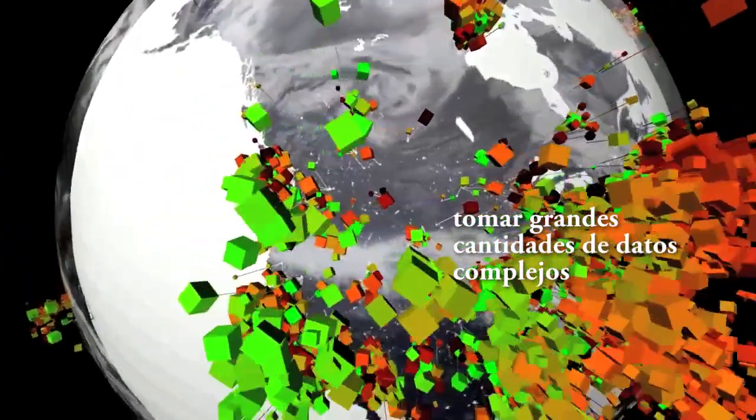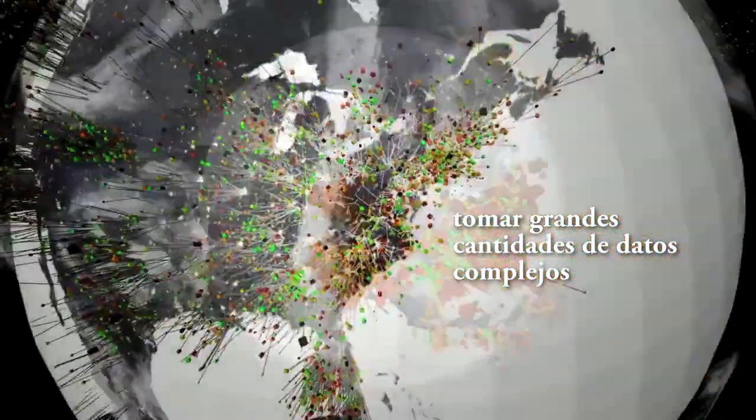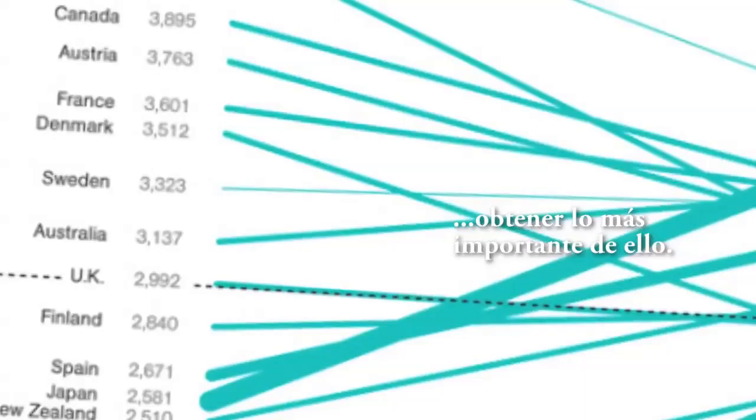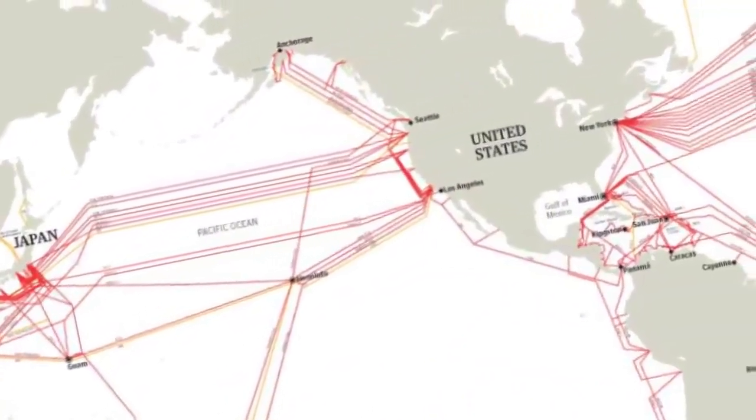Greetings, Corporación Unificada Nacional. My name is Paul DeBevec and I am the Chief Visual Officer of the University of Southern California's Institute for Creative Technologies. Scientific visualization is about taking masses of complex data and getting it so people can understand it quickly and get the most important things out of it.